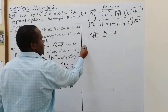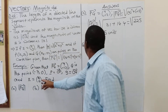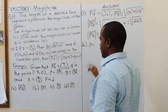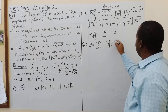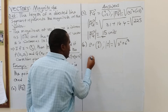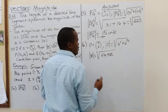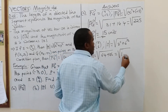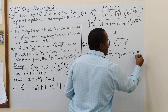The next one is B. We need to find the magnitude of vector A, where A is given as (8, 6). The magnitude of A is equal to the square root of 8 squared plus 6 squared. That is the square root of 64 plus 36, which equals the square root of 100. The square root of 100 is 10, so our answer is 10 units.